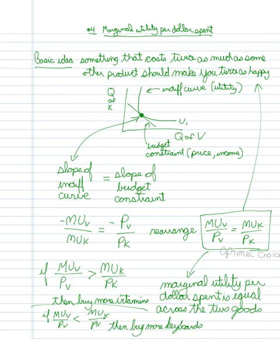So, this equation that's boxed right here is our mathematical way of talking about the optimal choice.